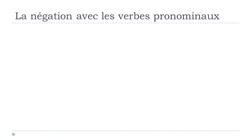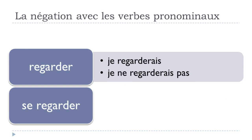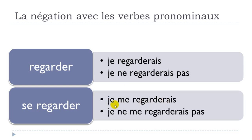For le conditionnel présent, REGARDER gives JE REGARDERAIS, and the negative form is JE NE REGARDERAIS PAS. For the pronominal form SE REGARDER: JE ME REGARDERAIS, and then JE NE ME REGARDERAIS PAS. Since it's a single verb, it's not that tricky — just remember that ME should stay connected to the verb, with NE before and PAS after.